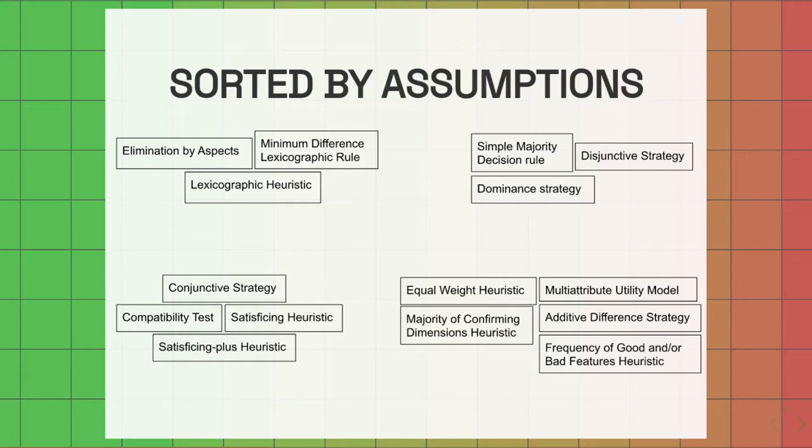Others, which are known as self-terminating, are where the alternatives and attributes don't all need to be processed before the final choice.